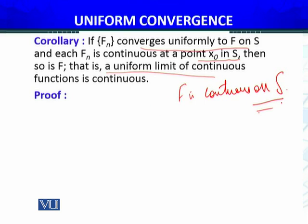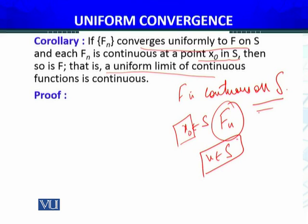Let's see what the difference is between the previous result and this result. In the previous result, FN was continuous only at a single point X₀ belonging to S, so we showed continuity of F only at that one point. Now, since the sequence of functions is continuous on the complete set S for all X belonging to S, the limit function F will also be continuous on the complete set S.